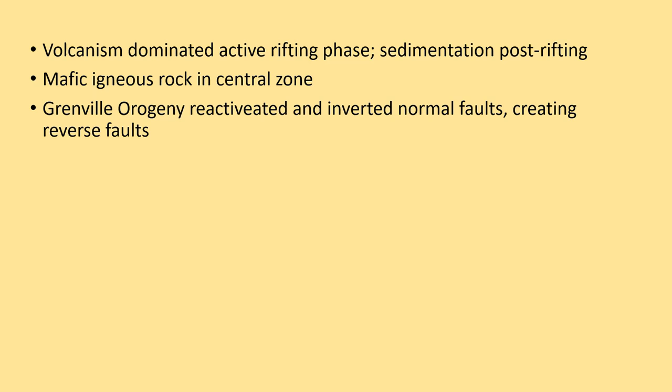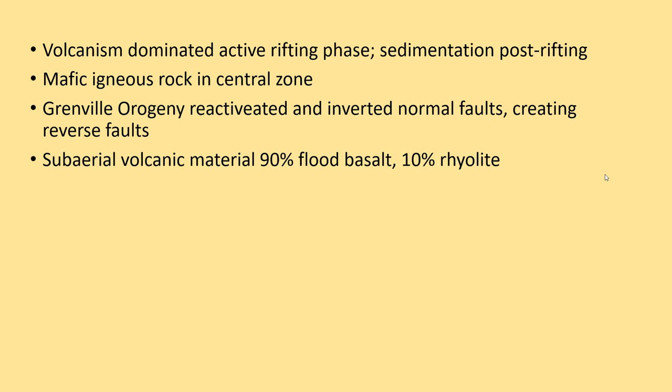After rifting was done, to the east there was a very large mountain-building event where North America collided with other continents, creating the ancestral Appalachian Mountains. This mountain-building event is called the Grenville Orogeny. Orogeny just means mountain-building event. The normal faults that were already there were reactivated during the Grenville Orogeny, inverting them — so instead of the hanging wall moving down, compression from the east caused the hanging walls to move up, turning normal faults into reverse faults.